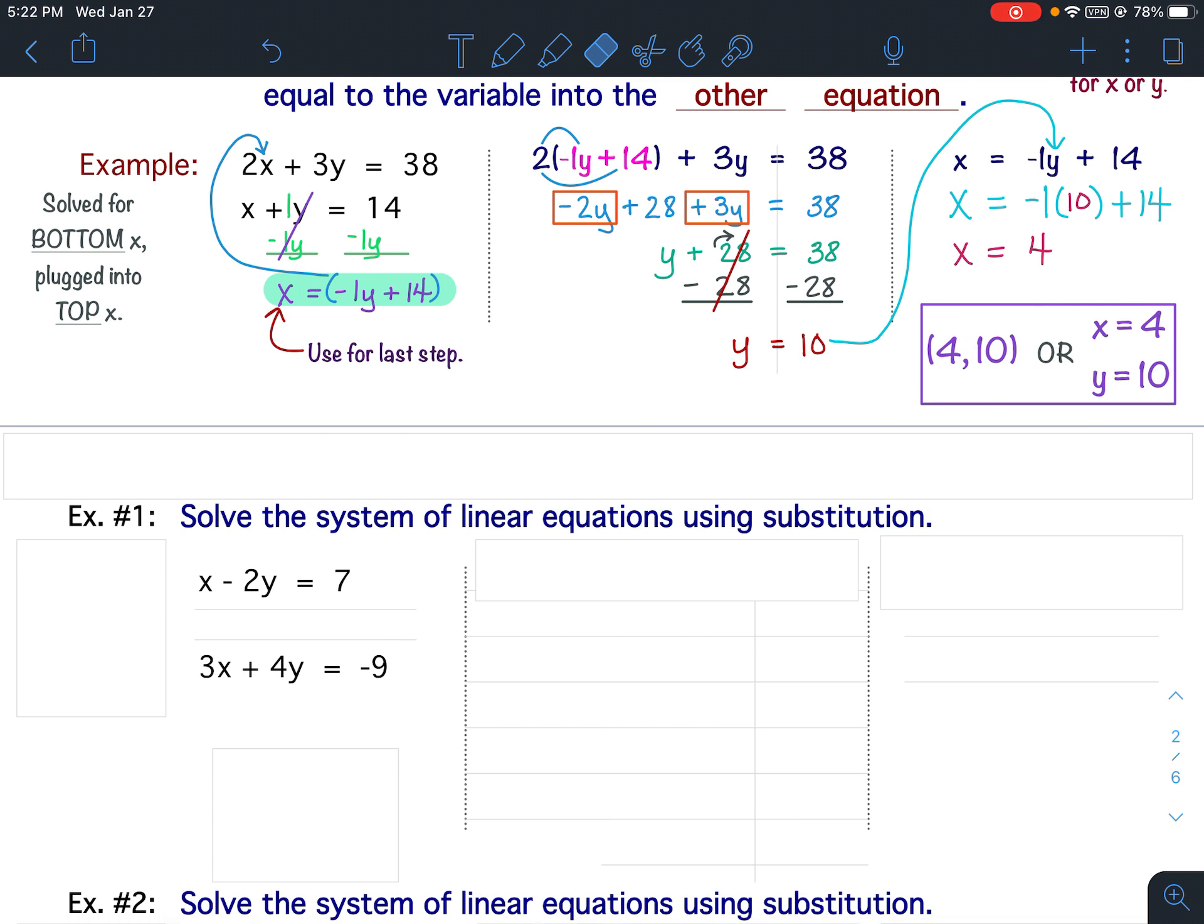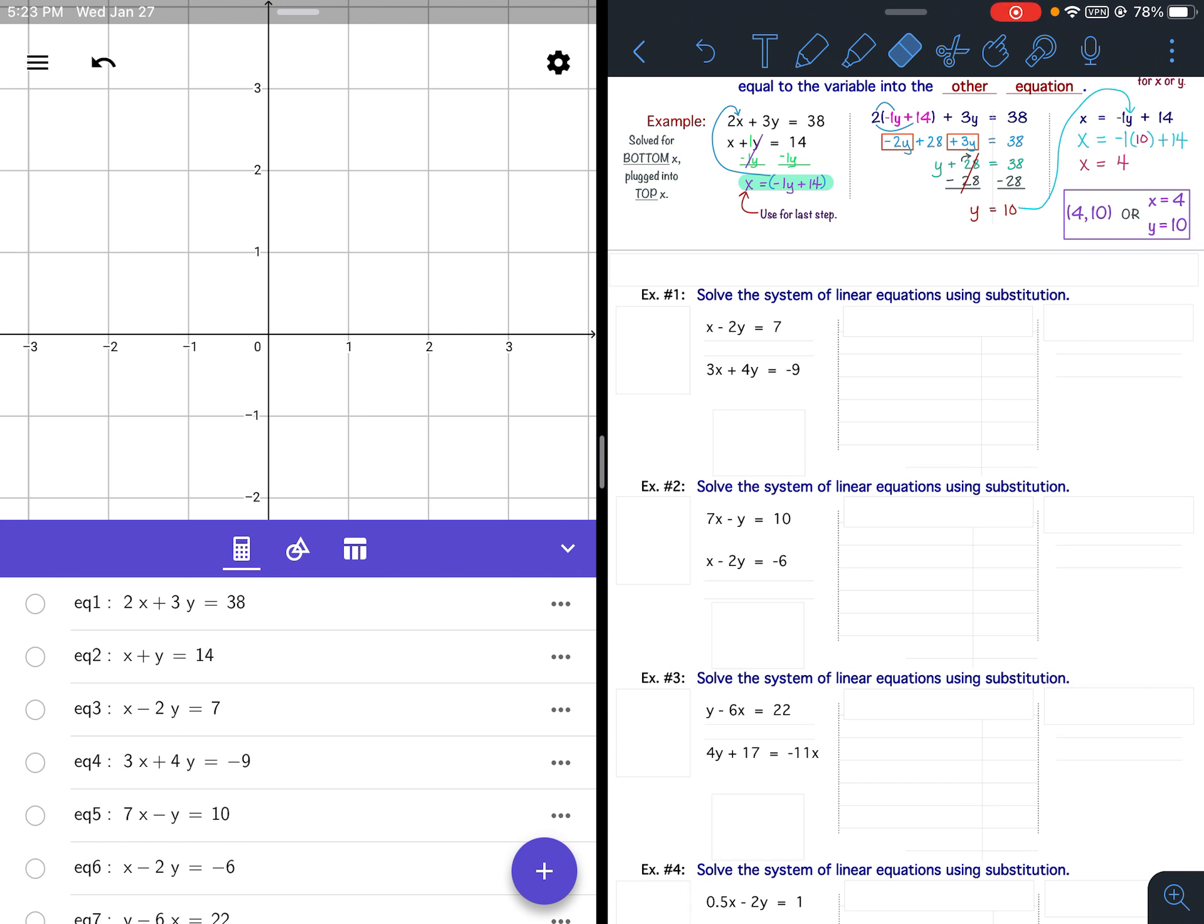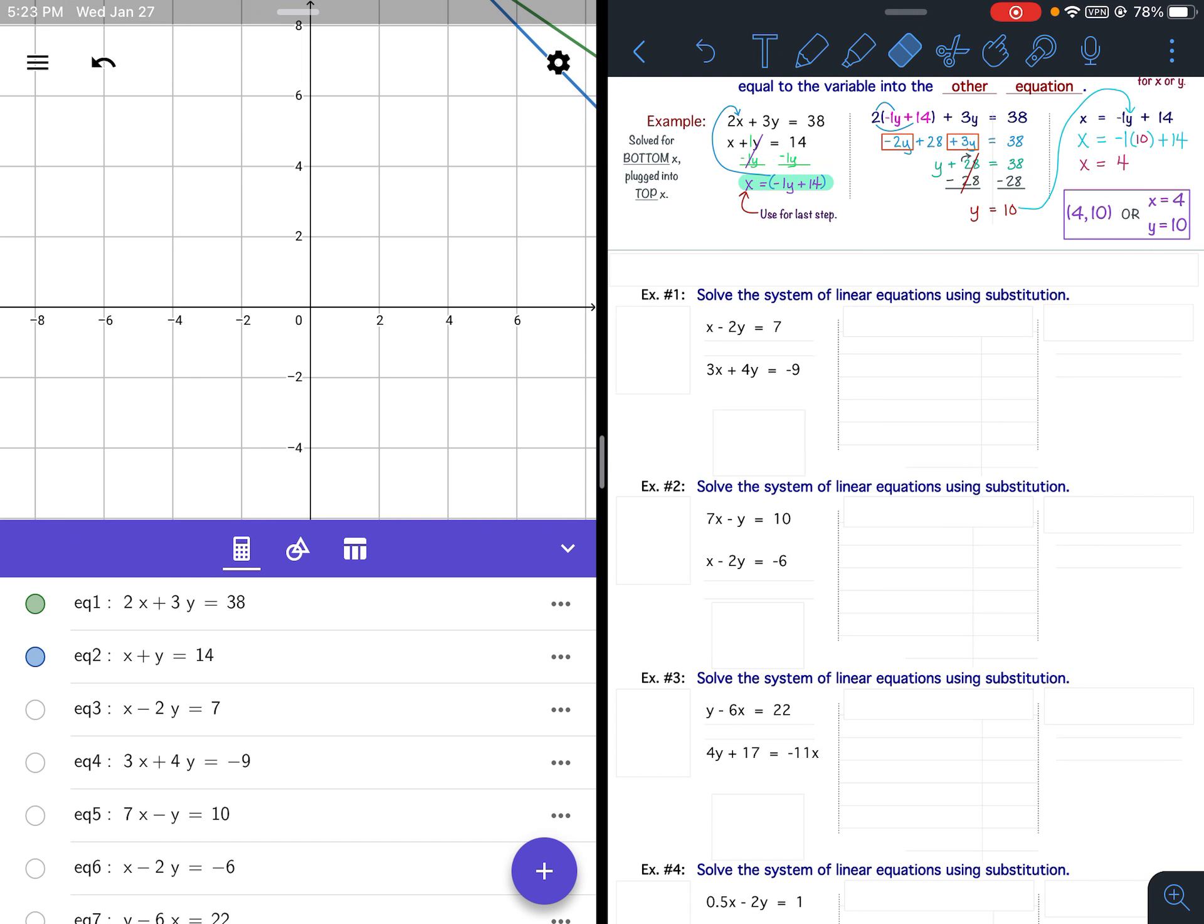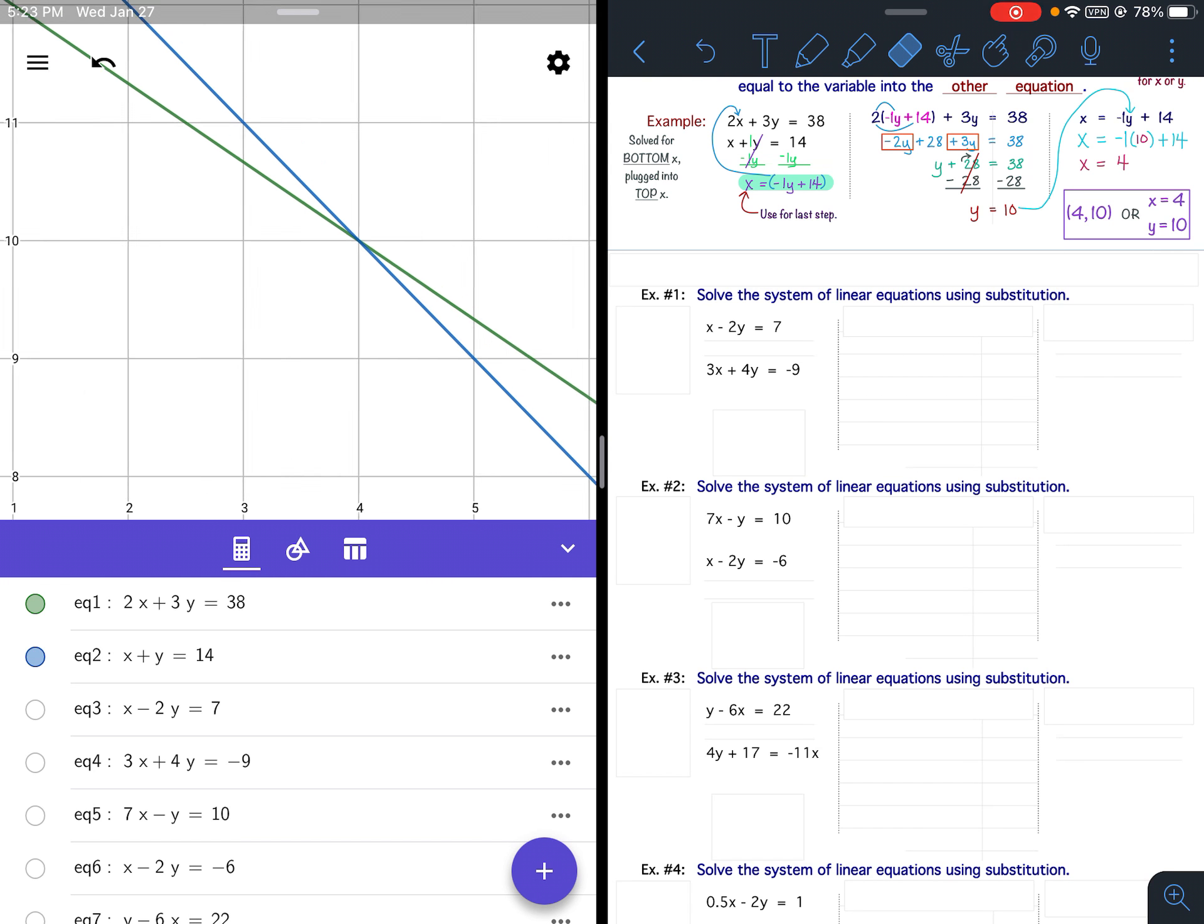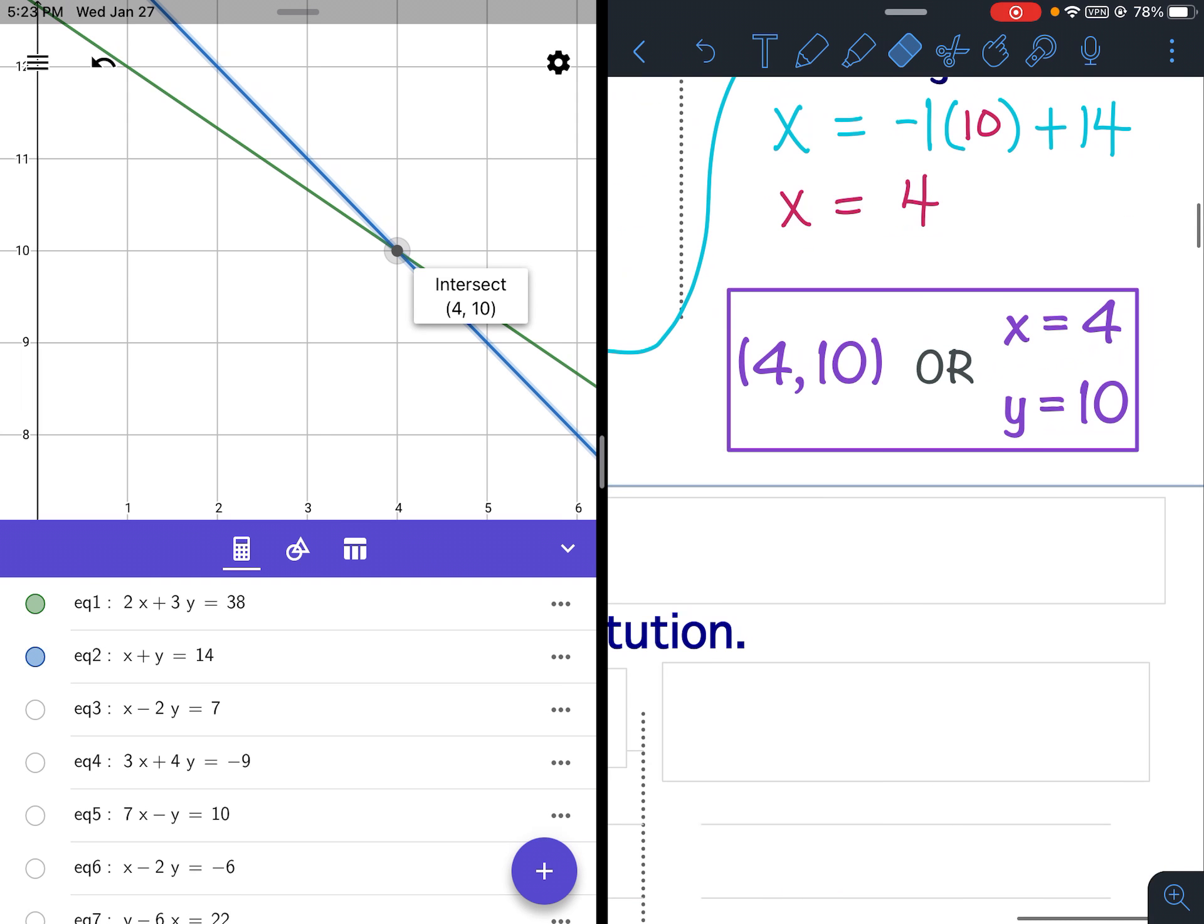But before I'm done, I want to check it. So I'm going to use the GeoGebra graphing calculator to check it. Now, I went ahead of time and put every single equation on this set of notes into my GeoGebra app, so that way I could easily just pull them up. So here are the two equations for the example here. If I scroll out, there we go. So that's where the lines intersect. Hit where they intersect. It says the intersection is at 4, 10. So x is 4, y is 10, which is exactly what we got. So we know that we are correct.